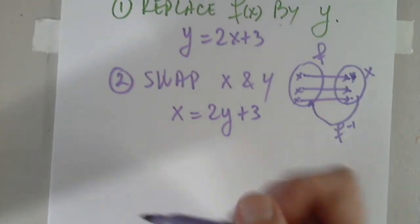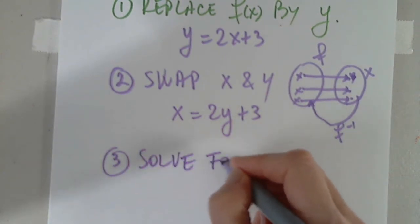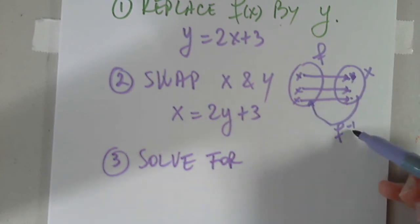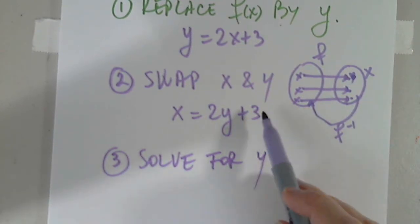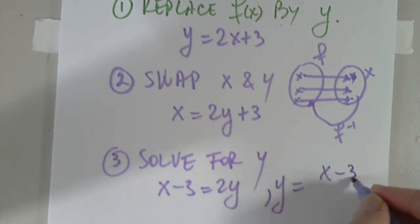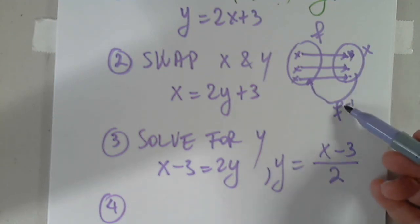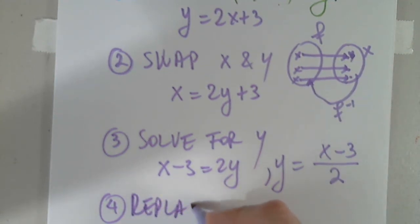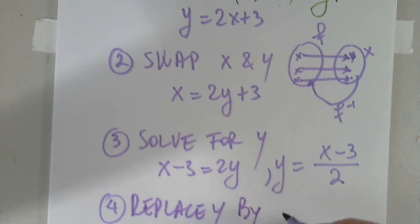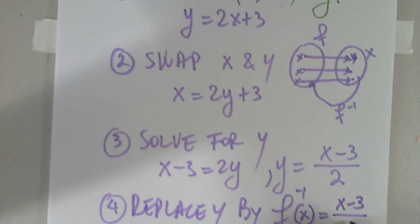Step 3, I have to solve for y, because now y becomes f inverse. I will subtract 3 and divide by 2. So I get that y equals x minus 3 divided by 2. Final step, step number 4, I just replace y by the notation f inverse. Replace y by f inverse of x equals x minus 3 over 2.